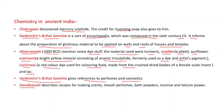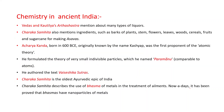Gandha Yugli describes recipes for making scents, mouth perfumes, bath powders, incense, and talcum powder. The Vedas and Kautilya's Arthashastra mention many types of liquors. Charak Samhita also mentions ingredients such as barks of plants, stems, flowers, leaves, wood, cereals, fruits, and sugarcane for making fermented beverages.